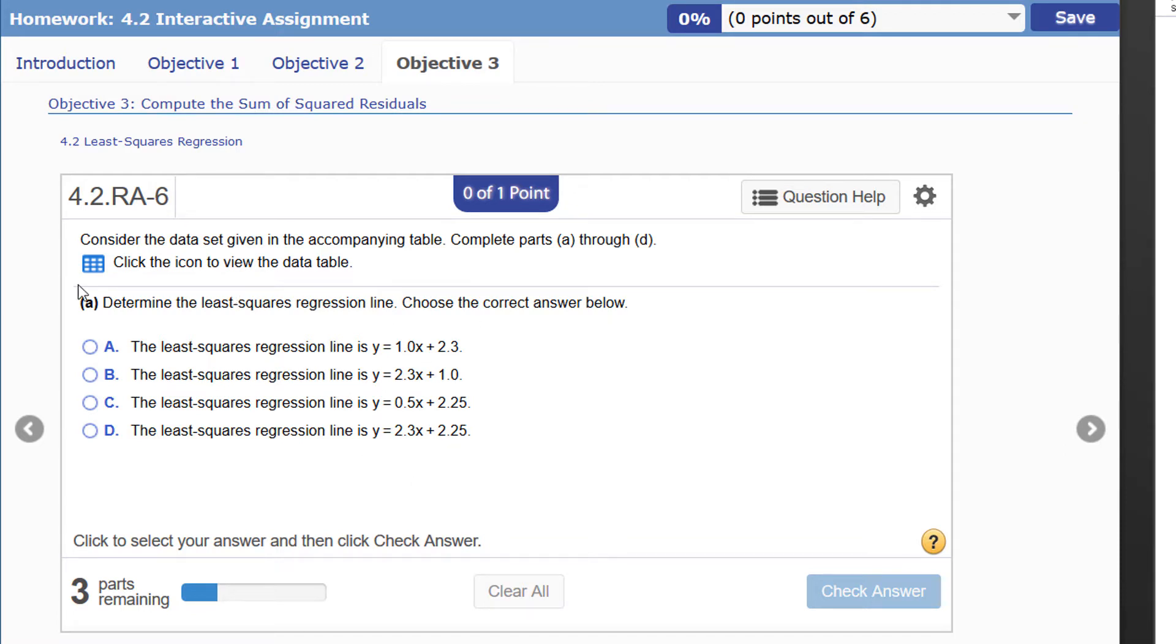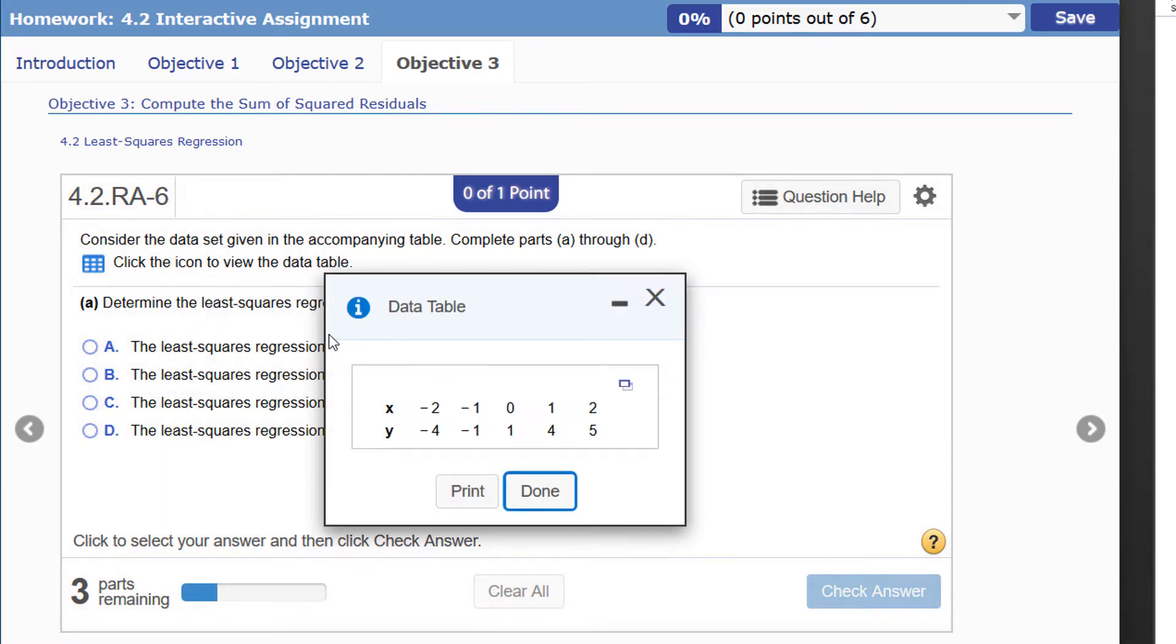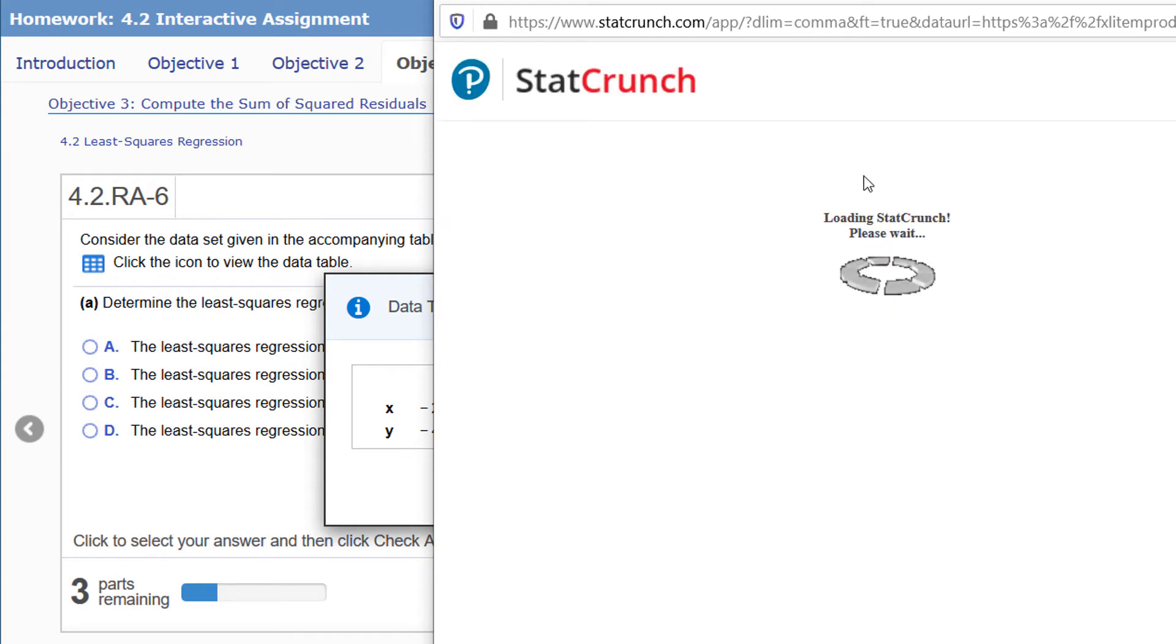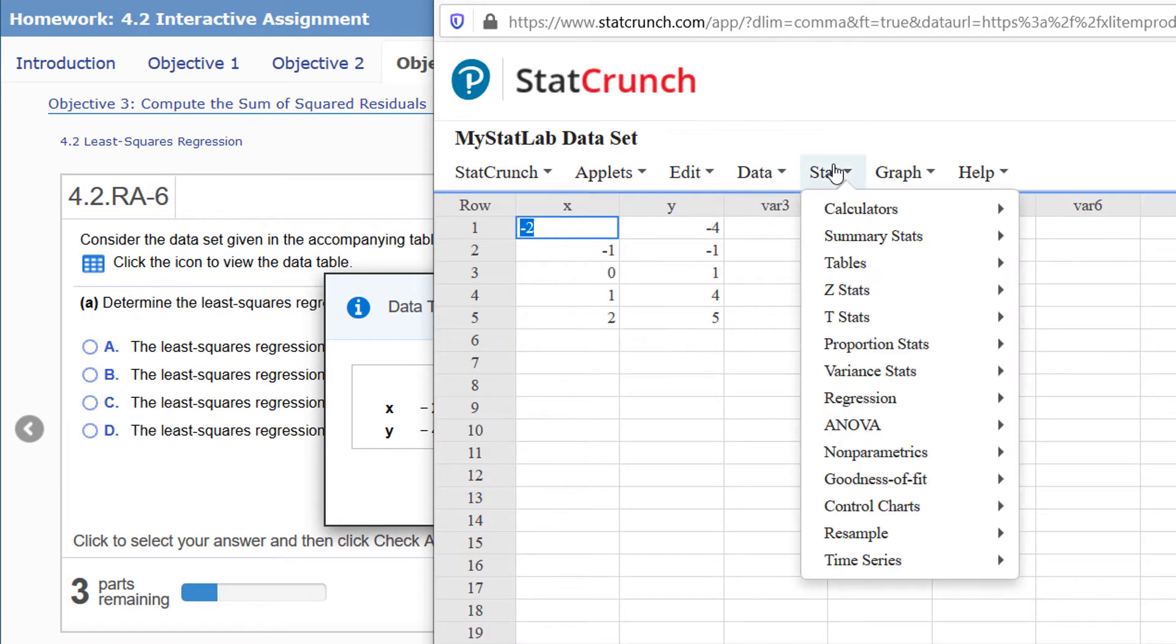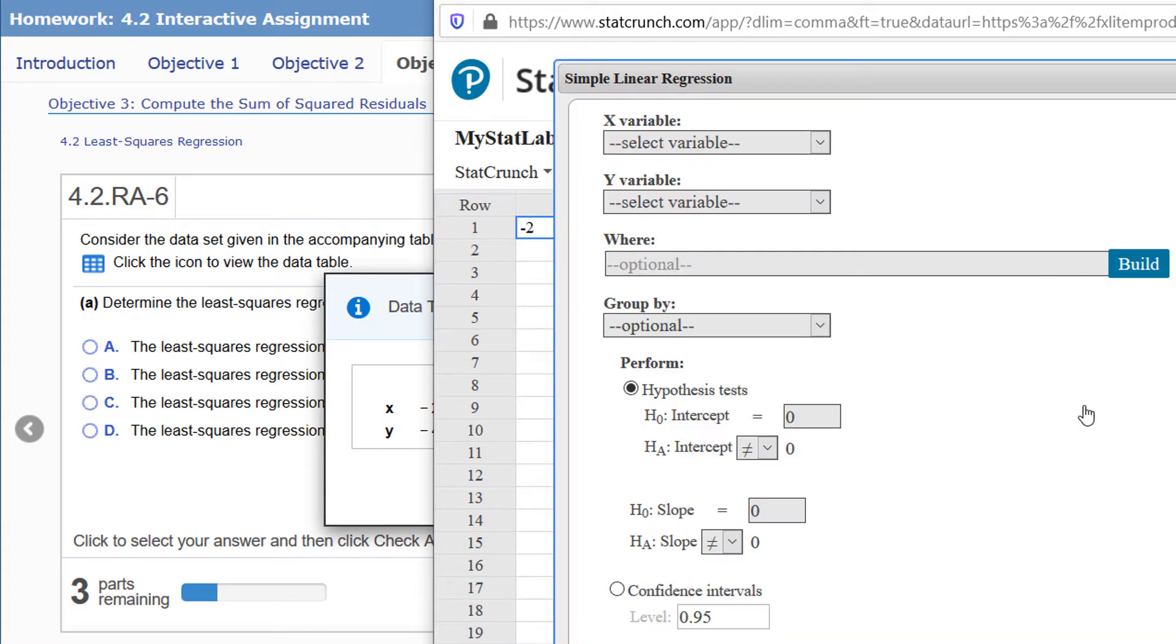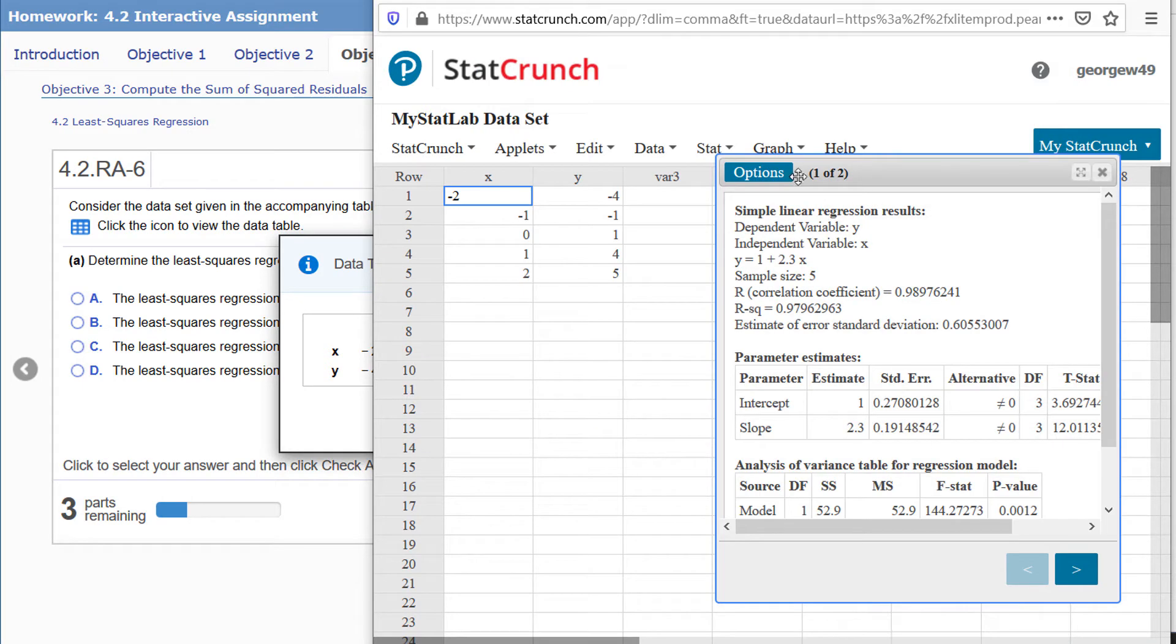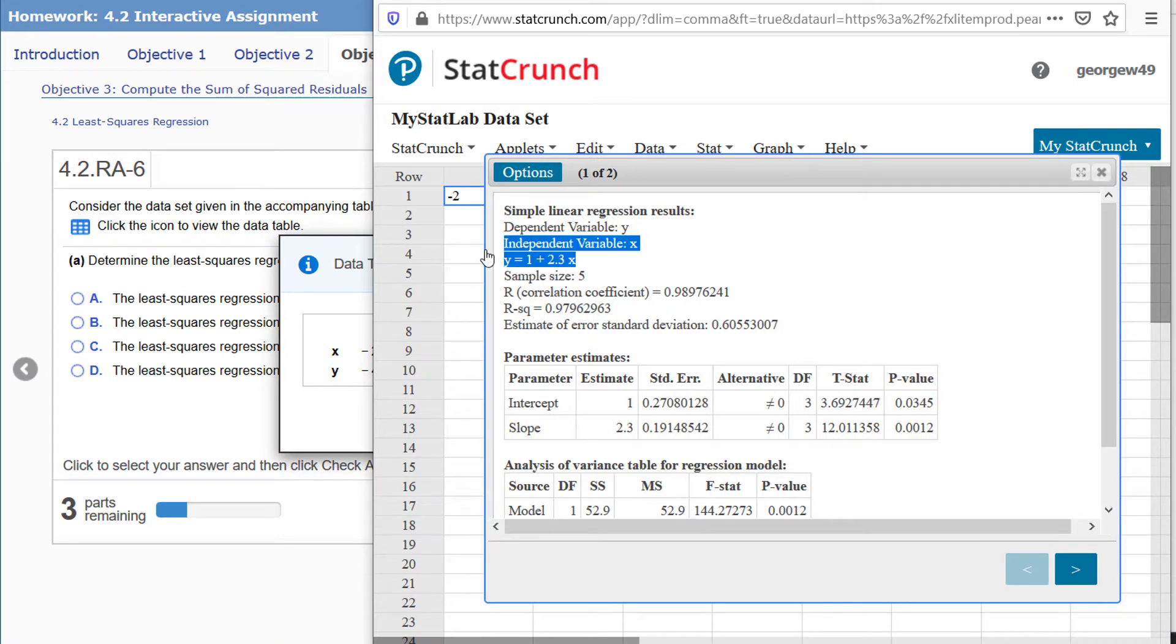I click to open the table, I click to open it in StatCrunch, and I'm going to click on Stat, Regression, Simple Linear. My x variable is x, my y variable is the column y, and I'm going to just click Compute.